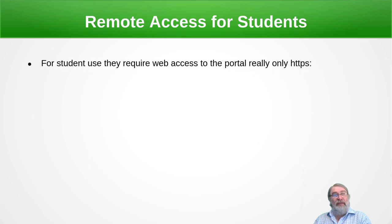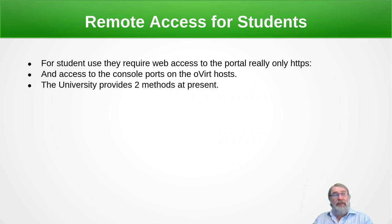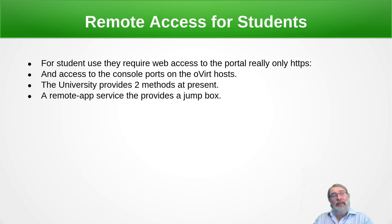For remote access for students to get to their VMs, the two things required are web access to the portal — that's only over HTTPS as the normal HTTP port is redirected to the secure port — and the console ports on the oVirt host for connections to SPICE and VNC. The university provides two methods to achieve this. One is a remote app service that provides a kind of jump box. Students log in to the remote app server, launch the browser on that, and utilize the SPICE viewer on that server to connect to the oVirt system.